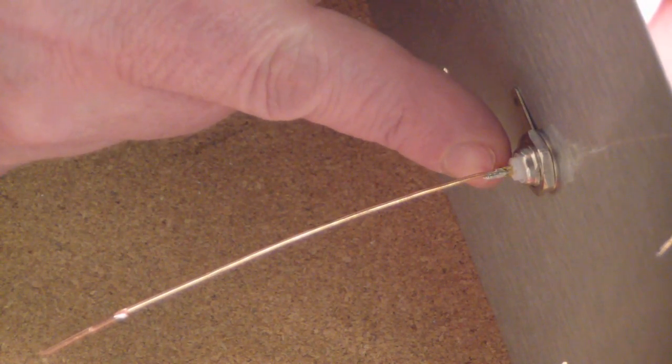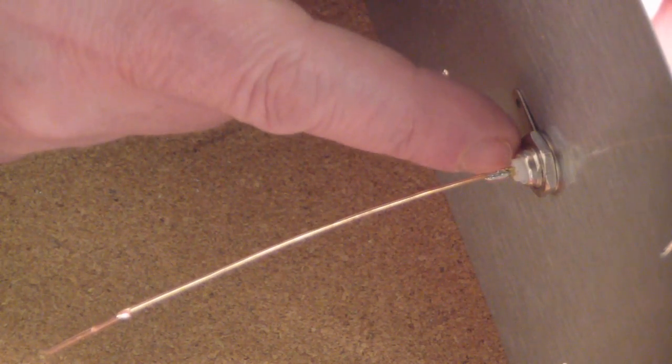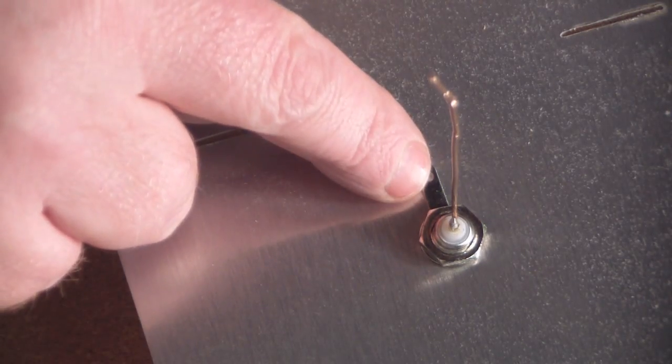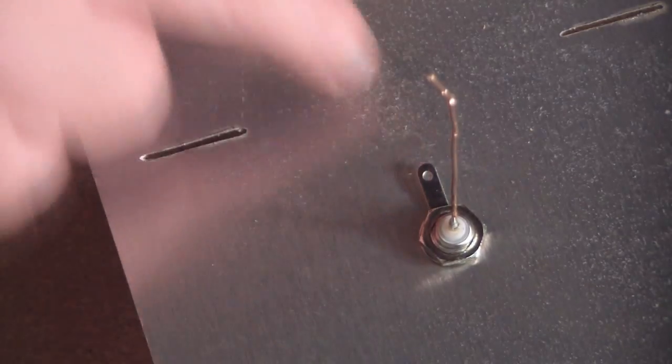Try not to keep your soldering iron on too long because this plastic here is very sensitive to heat and it can melt. So now what you want to do with this little connector here, we're going to actually solder to that.